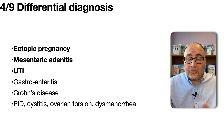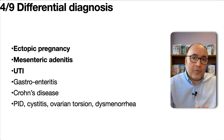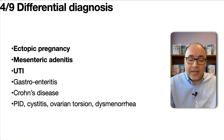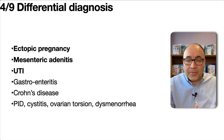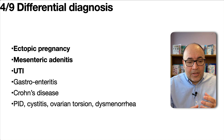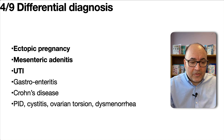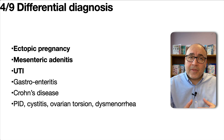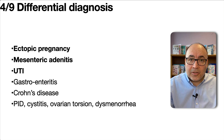Next up, differential diagnosis. The ones that really shouldn't be missed include ectopic pregnancy — in a woman of childbearing age, pregnancy must be ruled out. Mesenteric adenitis is usually seen in children and younger people following an upper respiratory tract infection. Also consider urinary tract infection, kidney stones, pyelonephritis, gastroenteritis, Crohn's disease in the terminal ileum, and a variety of gynaecological conditions.